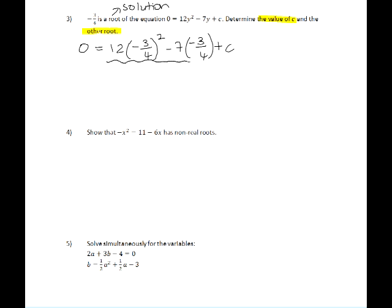If we punch this part of the equation into our calculator, you will get 12, and you now minus 12 from both sides, and you get c to be equal to negative 12. So therefore, your equation will be 0 is equal to 12y squared minus 7y minus 12.